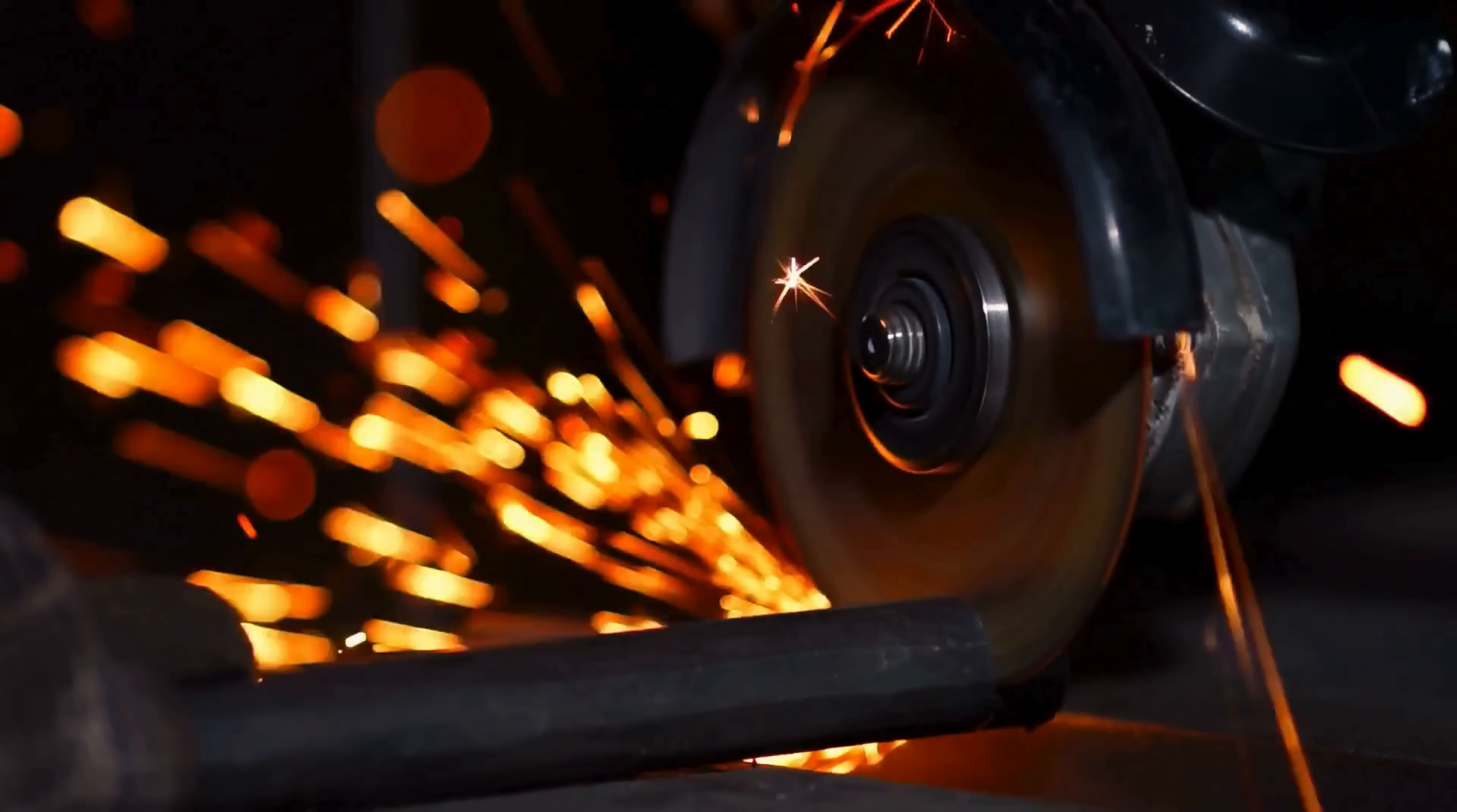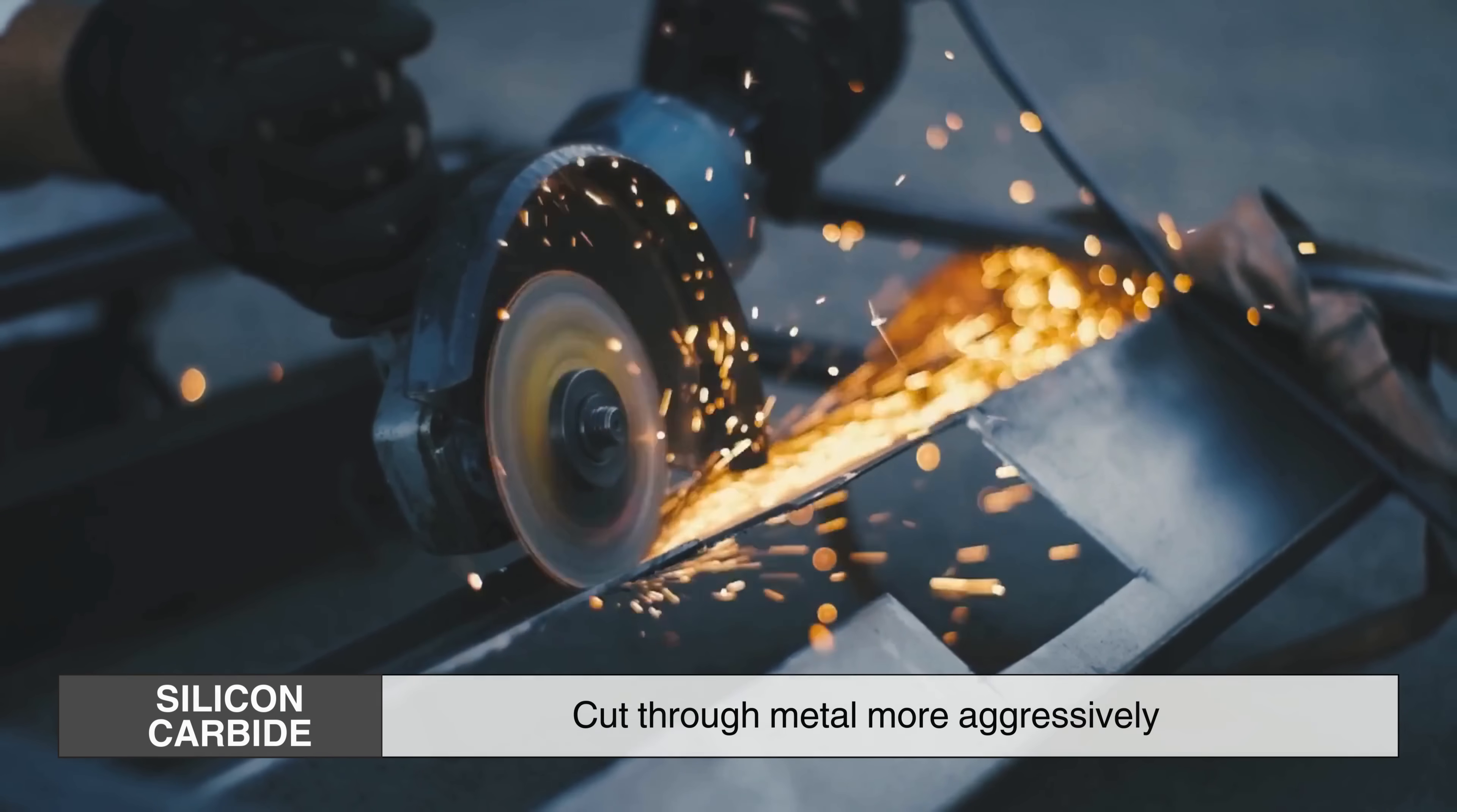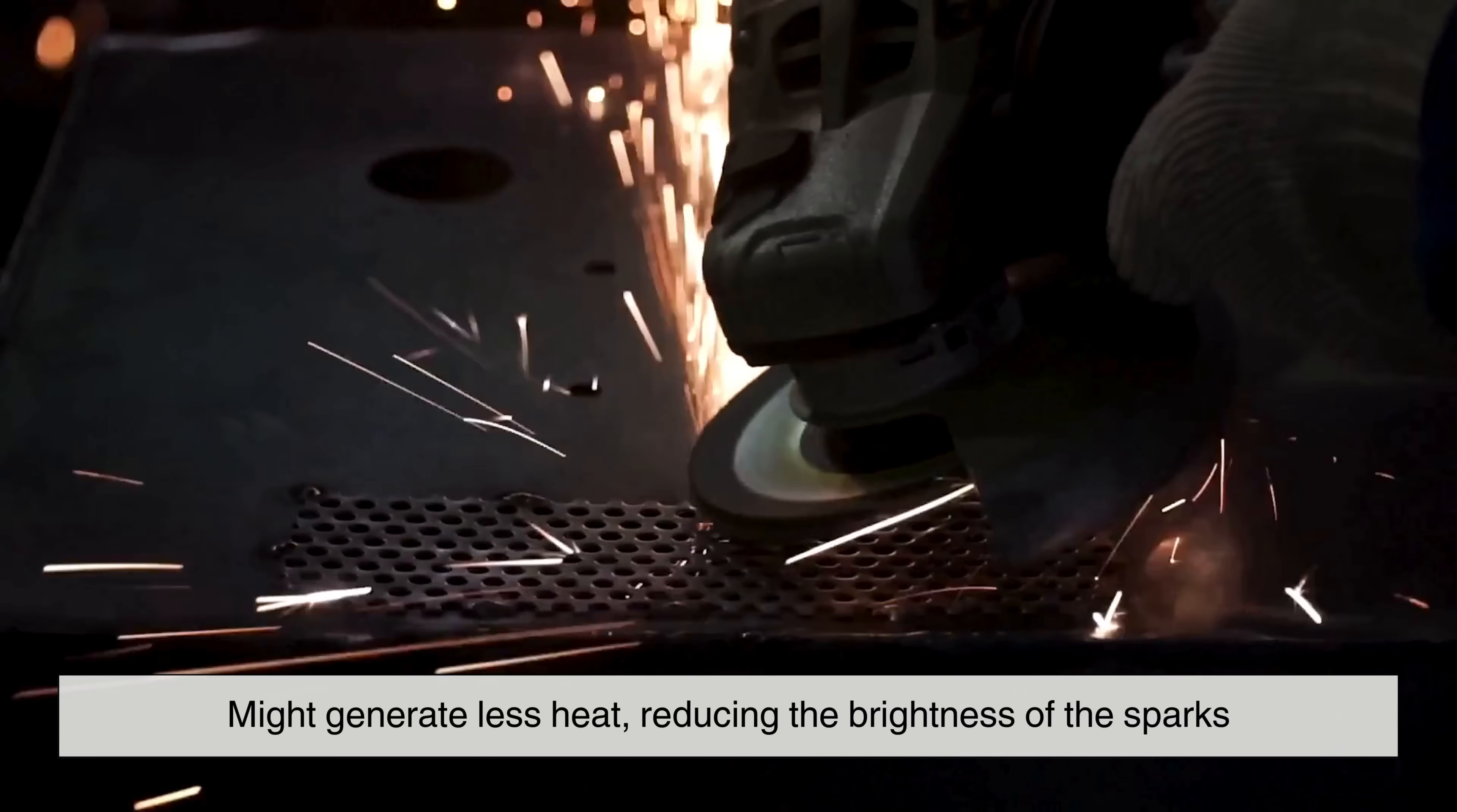The grinding wheel itself plays an essential role in the sparking phenomenon. Different abrasive materials generate varying levels of heat and friction. Harder abrasives, such as silicon carbide, cut through metal more aggressively, producing higher temperatures and more intense sparks. Meanwhile, softer abrasives might generate less heat, reducing the brightness of the sparks.